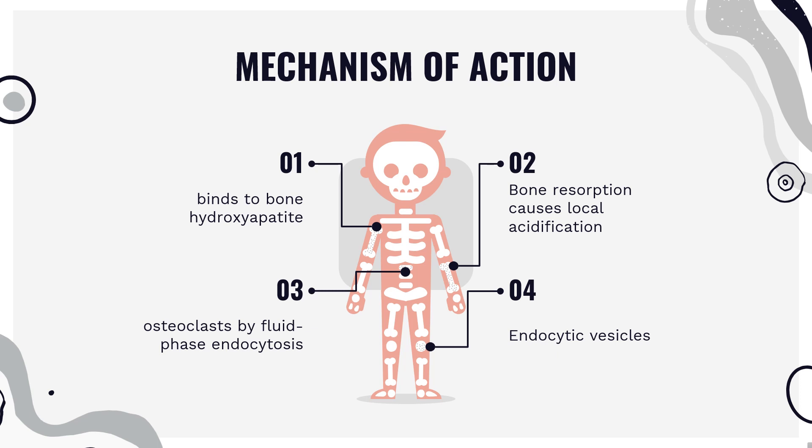Nitrogen-containing bisphosphonates such as zoledronate are known to induce apoptosis of hematopoietic tumor cells by inhibiting components of the mevalonate pathway: farnesyl diphosphate synthase, farnesyl diphosphate, and geranylgeranyl diphosphate. These components are essential for post-translational prenylation of GTP-binding proteins like RAP1. The lack of prenylation of these proteins interferes with their function and, in the case of RAP1, leads to apoptosis. Zoledronate also activates caspases, which further contribute to apoptosis.